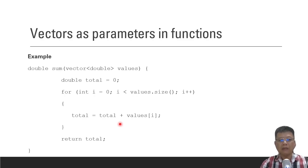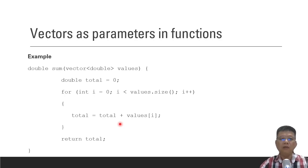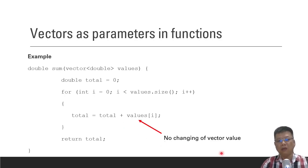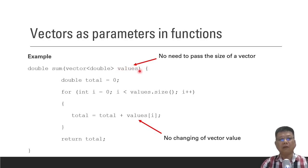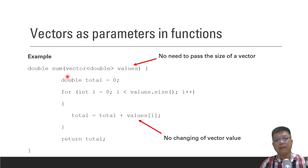We didn't update the vector, we just used it — called it like we normally call variables without updating. No changing of the vector value. Also, we don't need to pass the size of a vector. In arrays, we have to pass a size variable so the function knows the array size, but in vectors we don't need to pass the size.